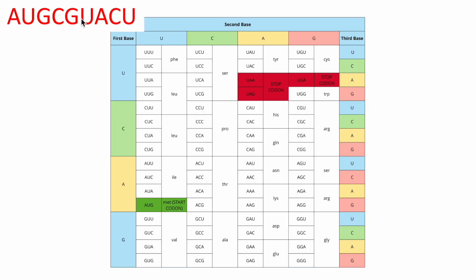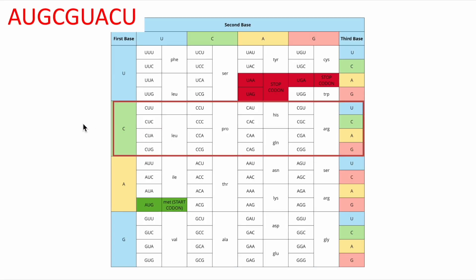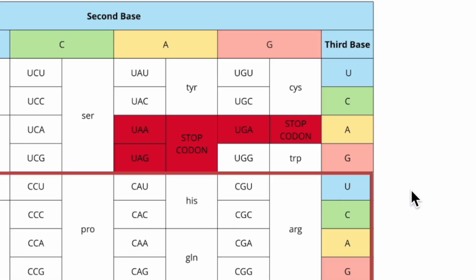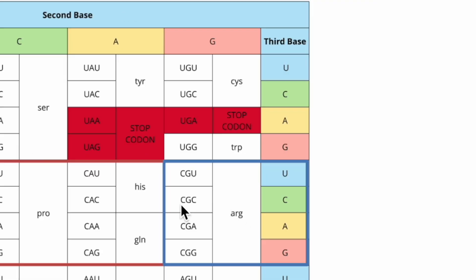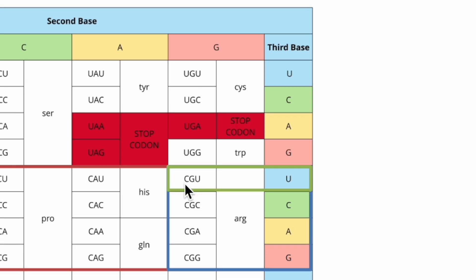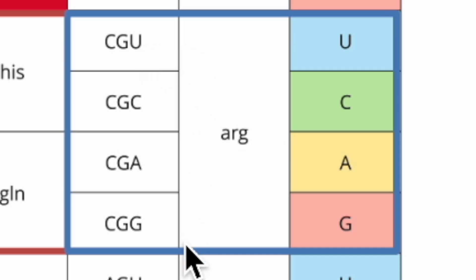Let's do CGU now. So we'll start here with C, which means we're somewhere in this zone, and then we'll look for our second base, which is going to be G. So we go down to the G column, and our third one is U that we're looking at. So we follow this U over to our last little box here. CGU corresponds to arginine. Now actually all of the codons that start with CG are going to be arginine, but that is a topic for another day.